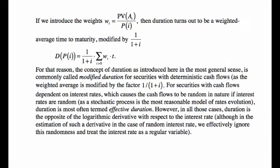If we introduce weights W_t = present value of A_t divided by the total price — and these add up to 1 — then duration turns out to be a weighted average time to maturity, modified by 1/(1 + i). So it equals 1/(1 + i) times the sum of W_t times t. This is the reason why in investments they call this modified duration — because it's modified by the factor 1/(1 + i).